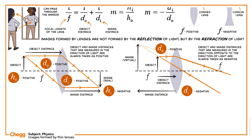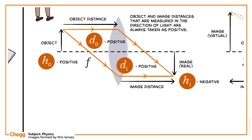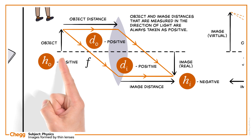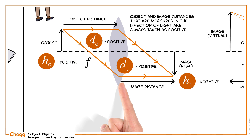We can see the images formed in the figure. If the magnification is negative, then the image formed is real. And if the magnification is positive, then the image formed is virtual. If we use the above mentioned sign conventions, the object distance must be measured from the object to the pole of the lens, and the image distance must be measured from the pole of the lens to the image.